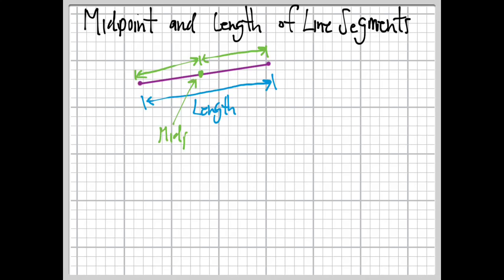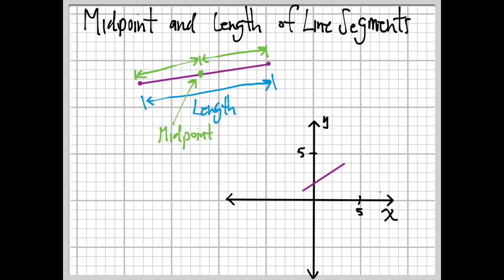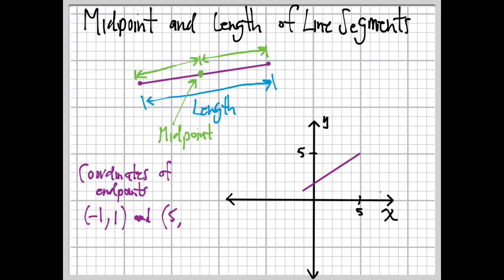Now we're going to use our coordinate plane, and we'll have an example of a line segment on here. When you're asked to find the midpoint and length of line segments, you'll be given the coordinates of the endpoints. For this example, we have endpoints here and here. The coordinates are negative 1, 1 and 5, 5.